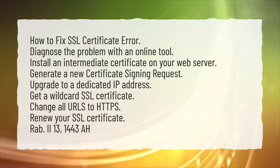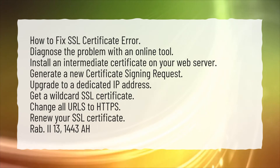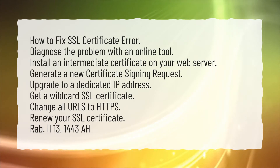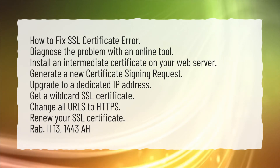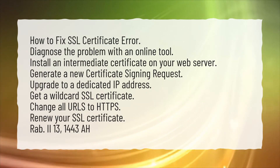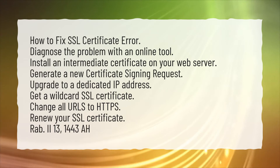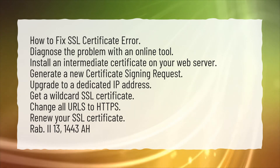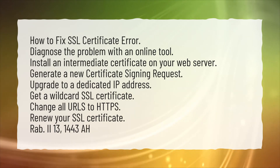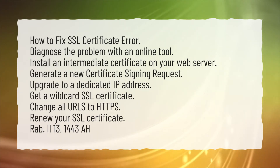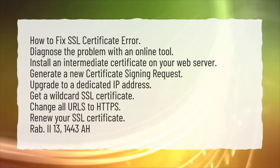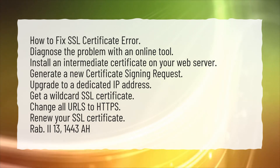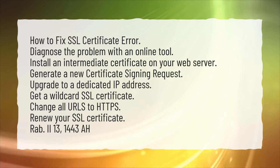Install an intermediate certificate on your web server. Generate a new certificate signing request. Upgrade to a dedicated IP address. Get a wildcard SSL certificate. Change all URLs to HTTPS. Renew your SSL certificate.